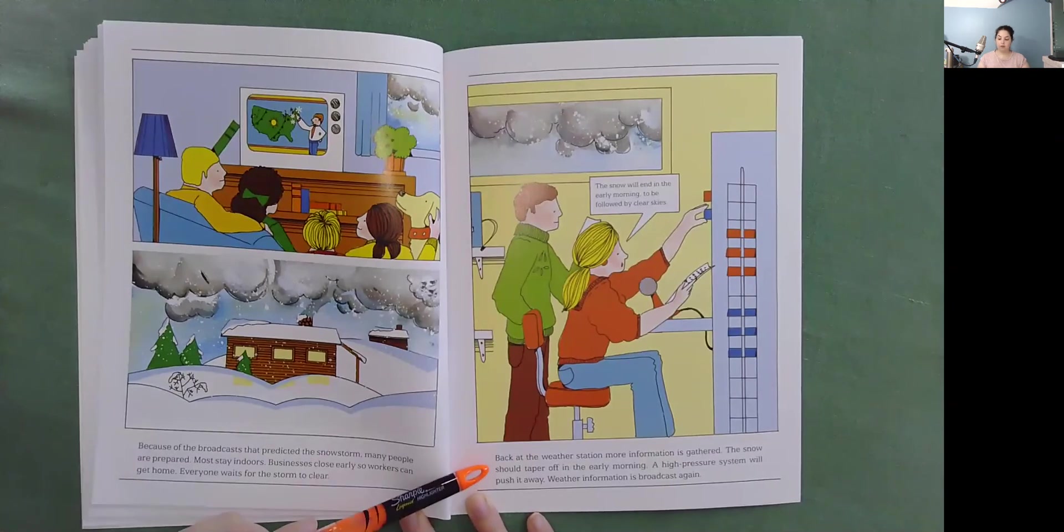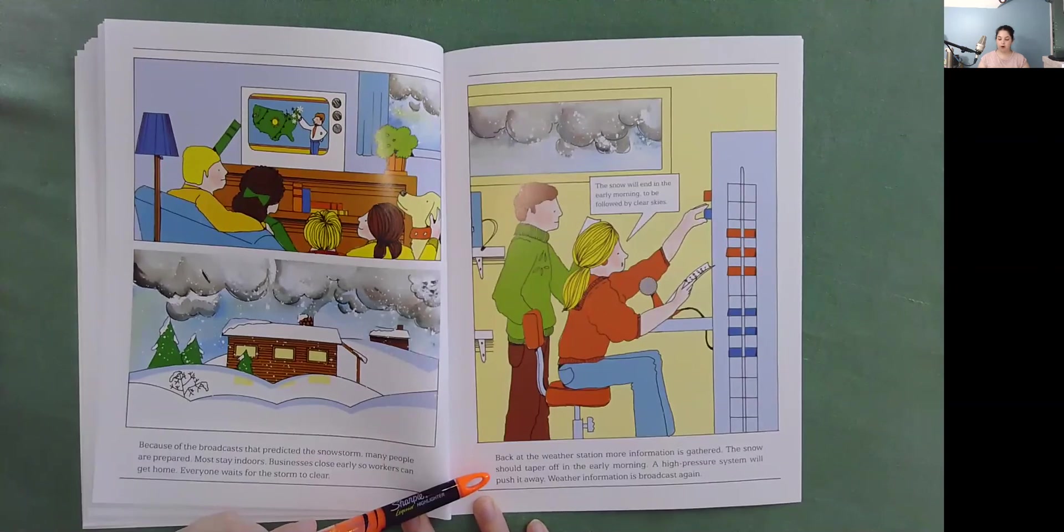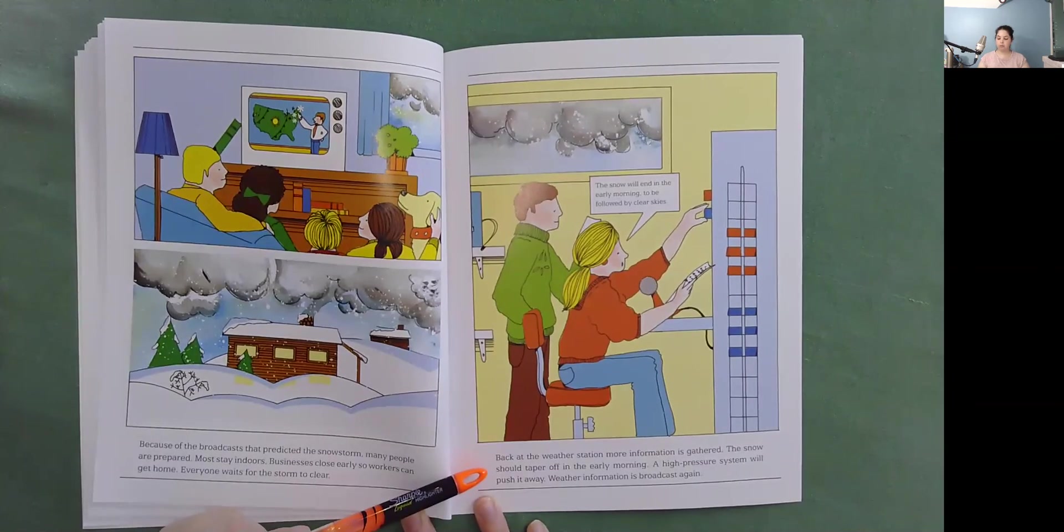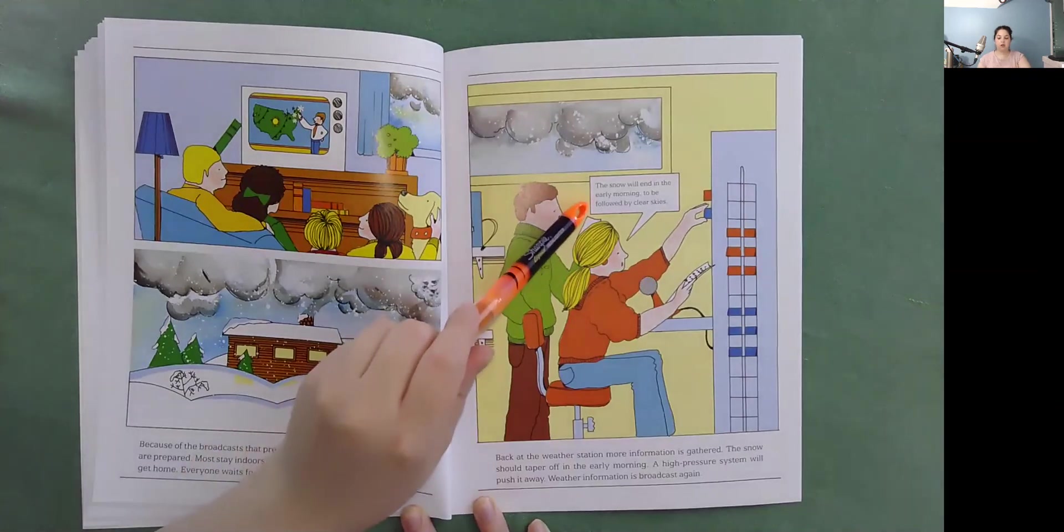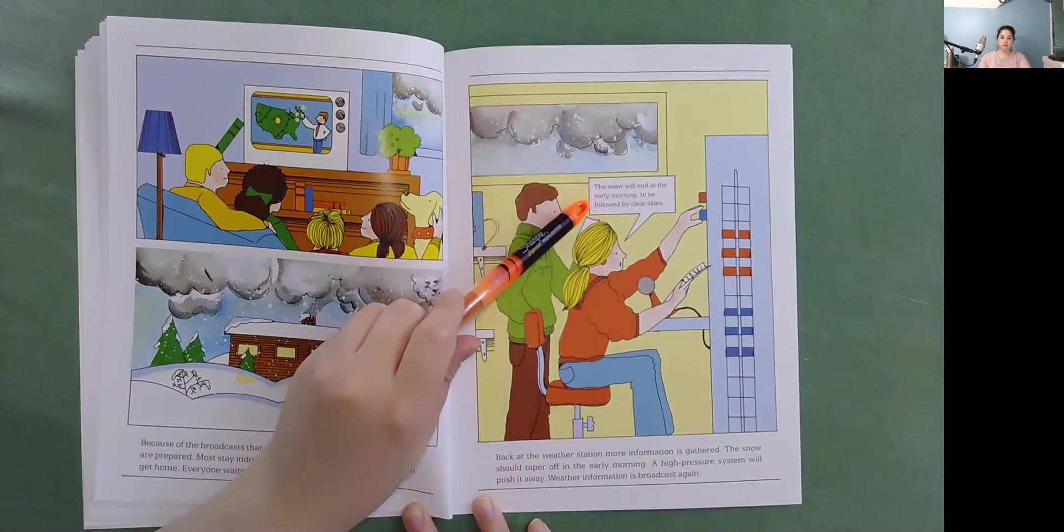Back at the weather station, more information is gathered. The snow should taper off in the early morning. A high pressure system will push it away. Weather information is broadcast again. The snow will end in the early morning to be followed by clear blue skies.